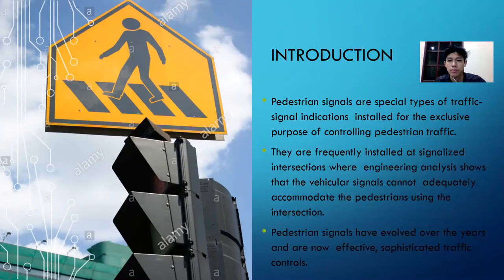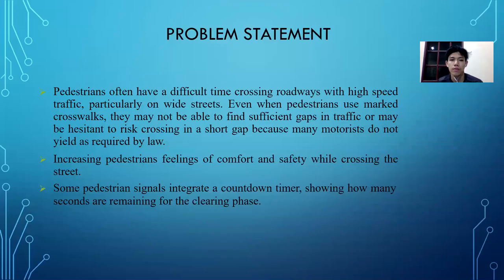For the introduction, pedestrian signals are a special type of traffic signal indication installed for the exclusive purpose of controlling pedestrian traffic. They are frequently installed at signalized intersections where engineering analysis shows that vehicular signals cannot adequately accommodate pedestrians using the intersections. Pedestrian signals have evolved over the years and are now effective, sophisticated traffic controls.